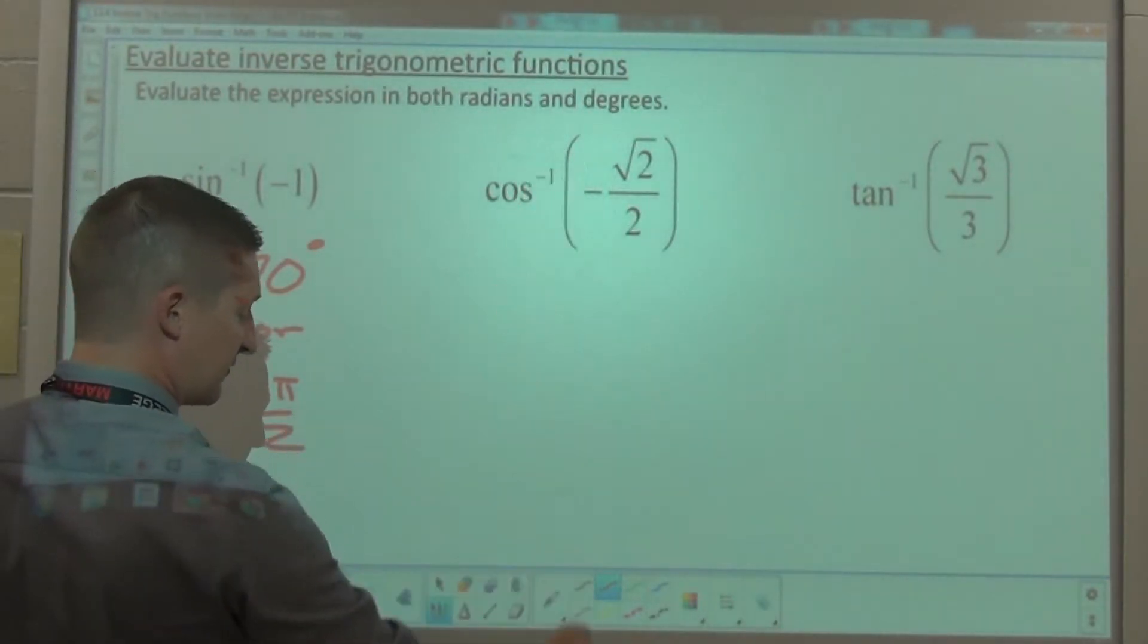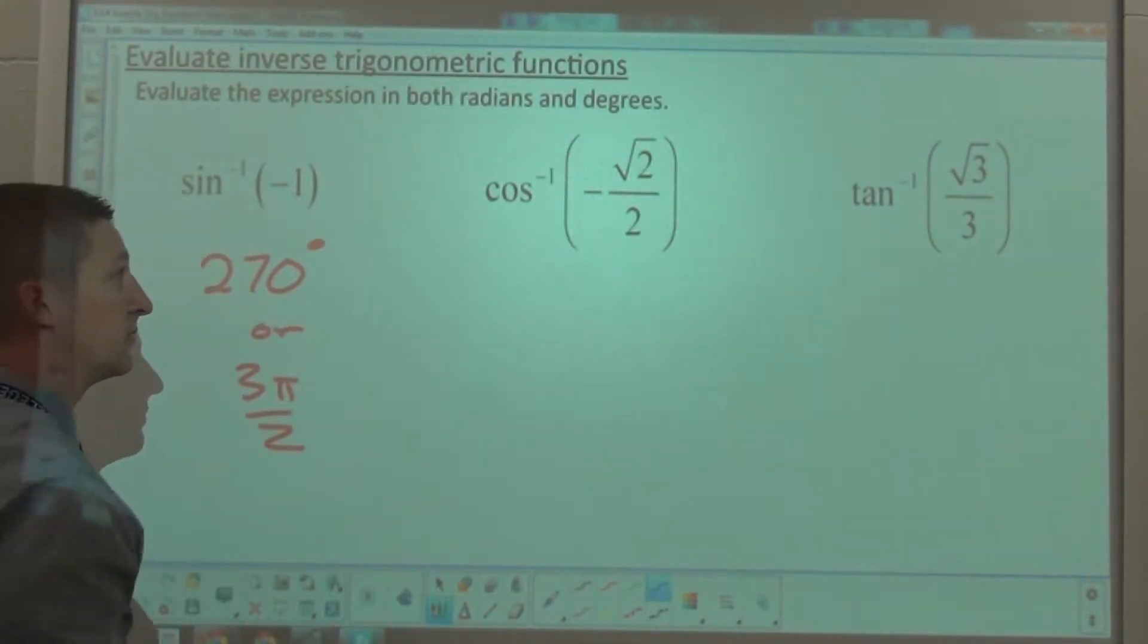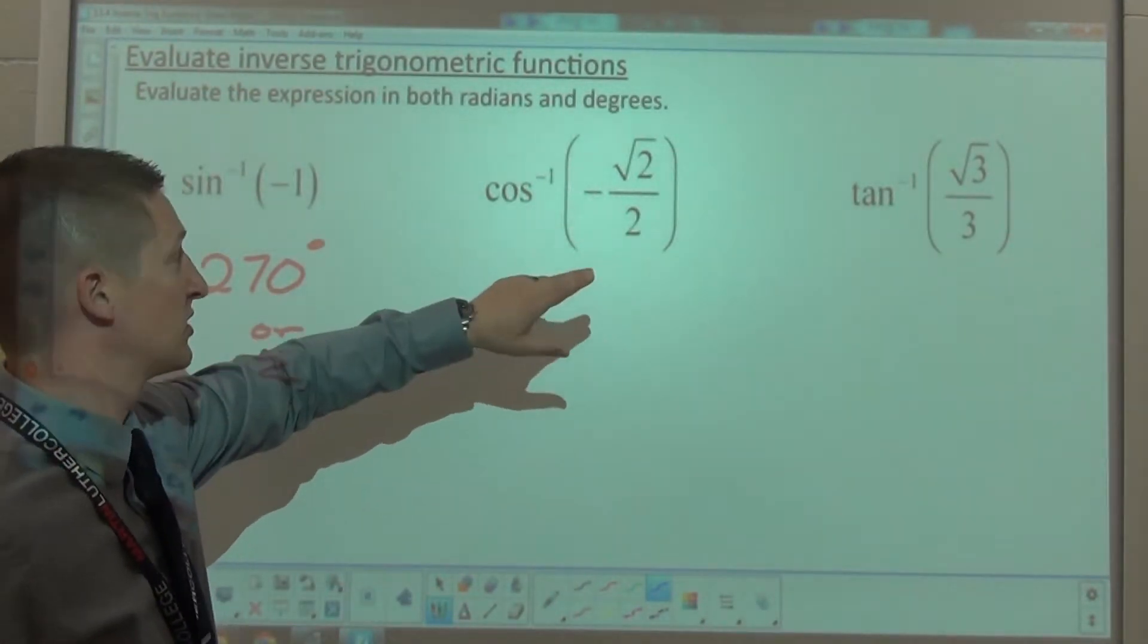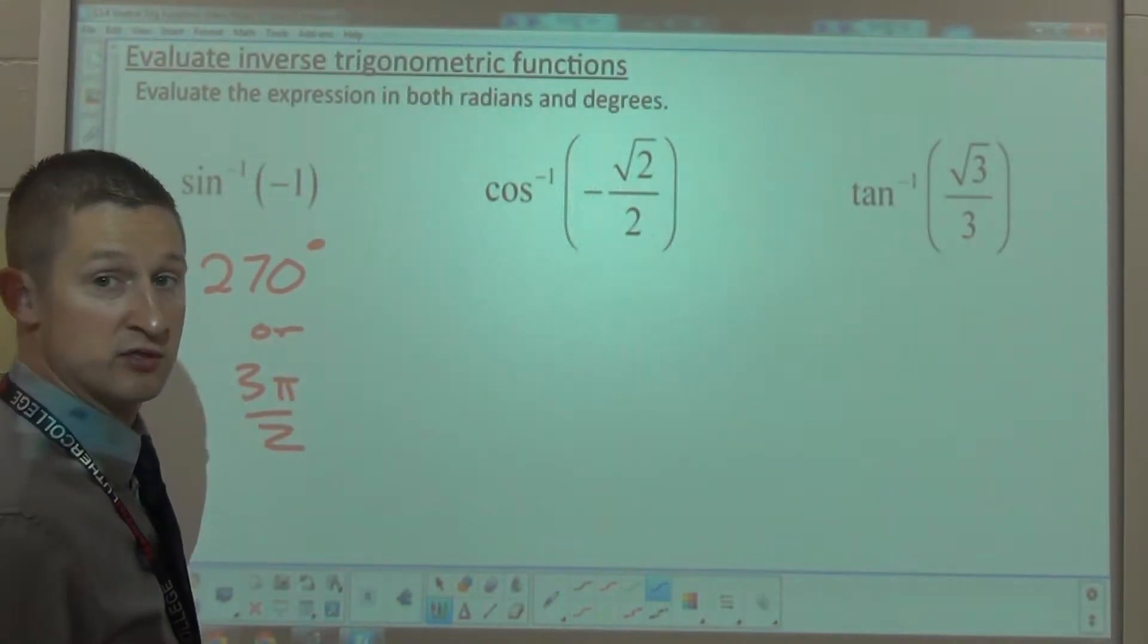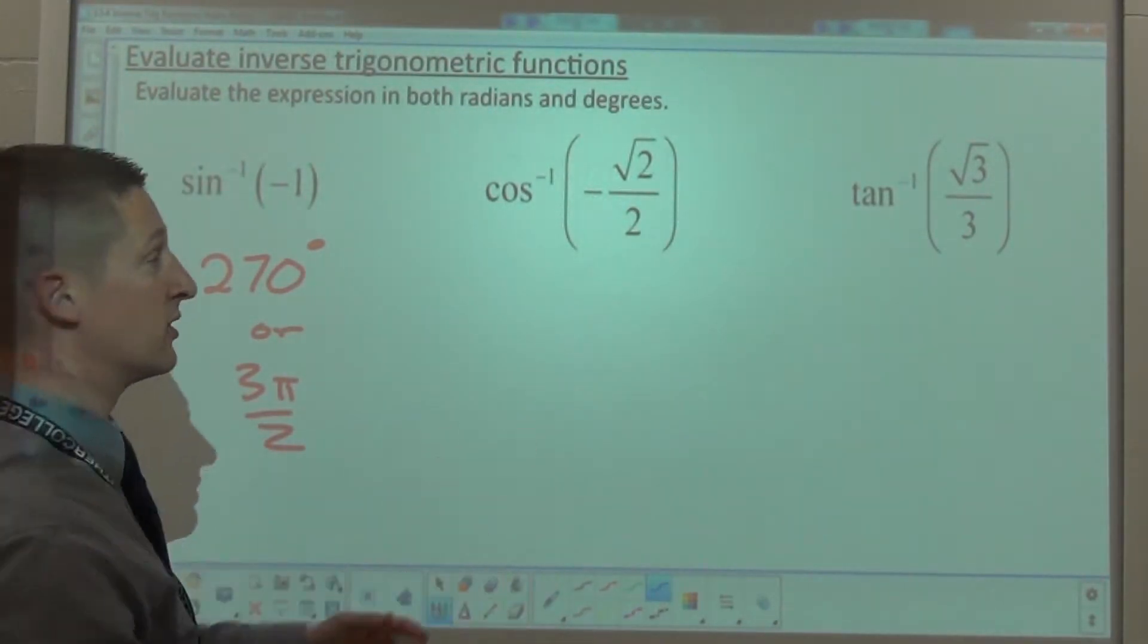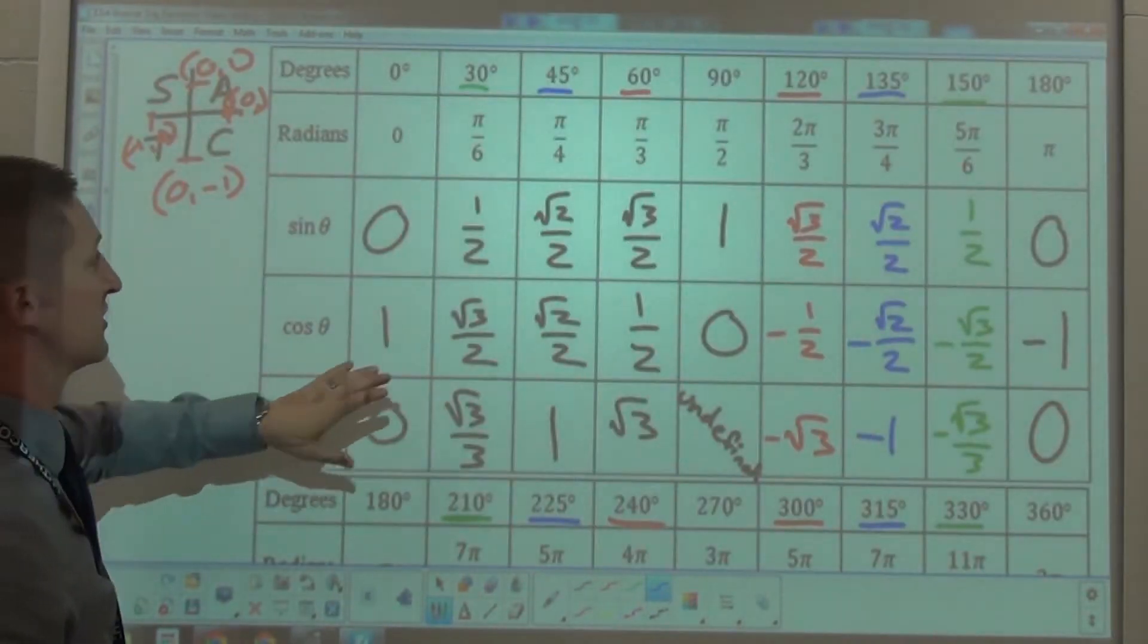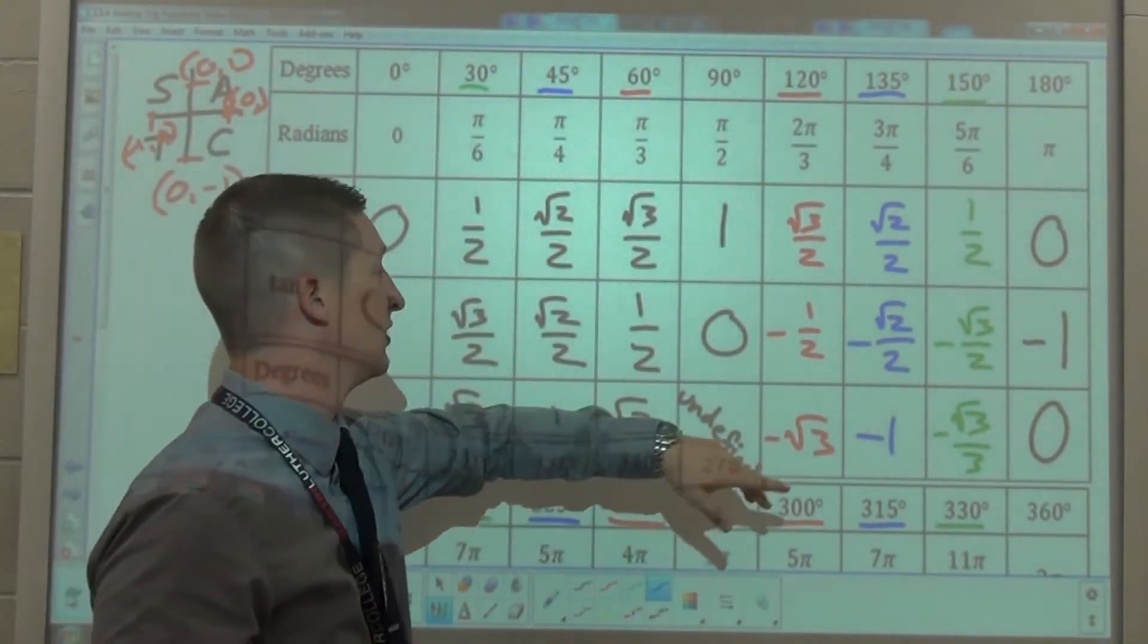So, arc cosine of negative square root of 2 over 2. Well, where am I going to find that one? I recognize square root of 2 over 2 as being the value of cosine for 45 degrees. I'm using my hand trick, that's right in the middle. But it's negative, so what I'm going to do is, I'm going to check out those, let's see, not 45, oh, cosine, here we go.